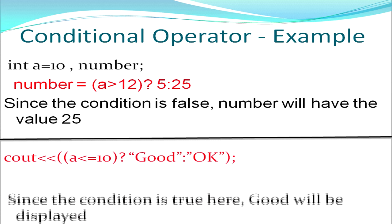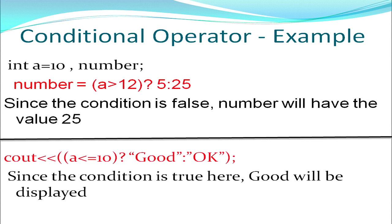Since the condition is false in the first example, number gets the value 25. In another example, 'good' will be displayed if a is less than or equal to 10, and 'okay' will be displayed otherwise. Here since the condition is true, 'good' will be displayed. So the conditional operator works on the condition — output is given according to whether it is true or false.